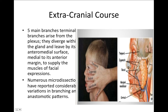The five main terminal branches diverge within the parotid gland and leave through its anteromedial surface to supply the muscles of facial expression. These branches are: temporal, zygomatic, buccal, marginal mandibular, and cervical. This branching pattern is highly variable.